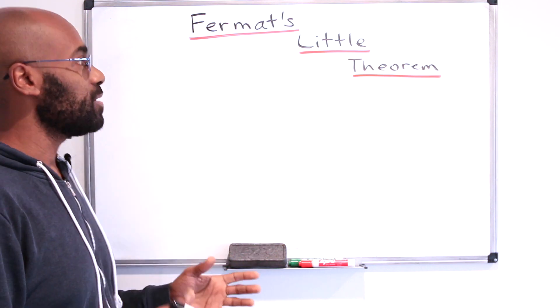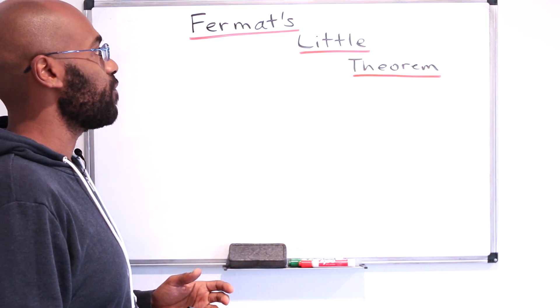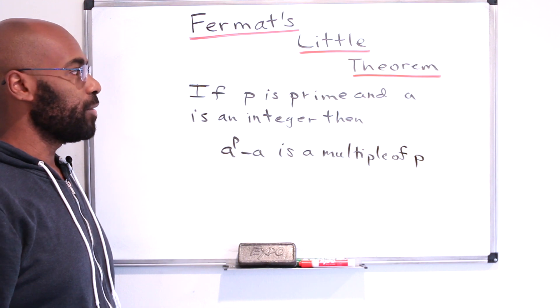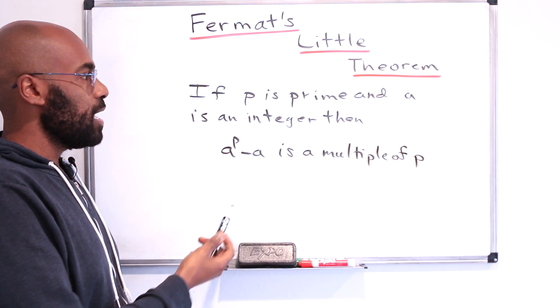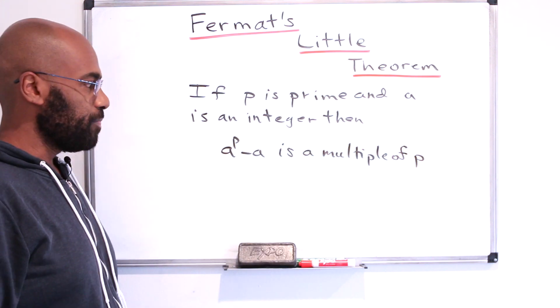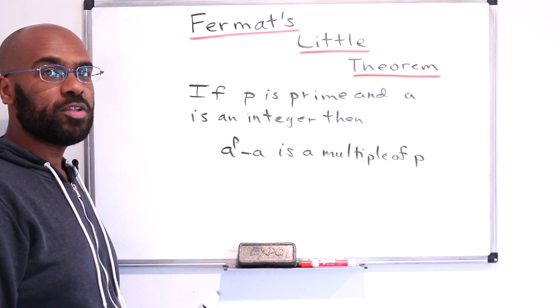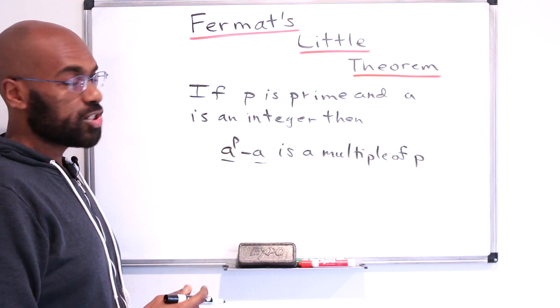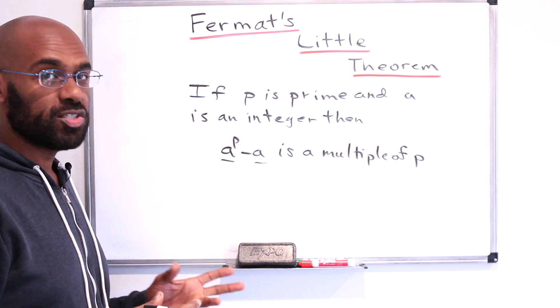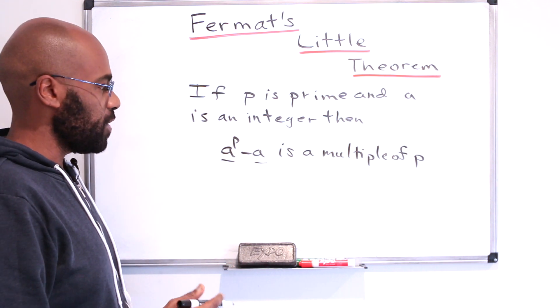So today I want to talk about this classic theorem in number theory called Fermat's Little Theorem. And it states the following: If p is a prime number and a is any integer, then a to the p minus a is a multiple of p, regardless of what a is. So we're going to give a complete explanation as to why this is true.